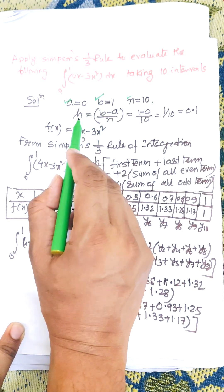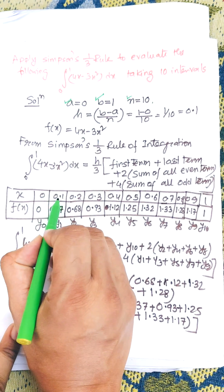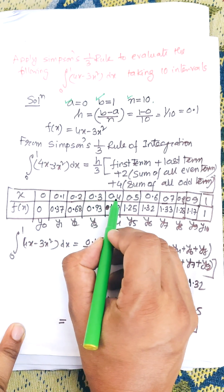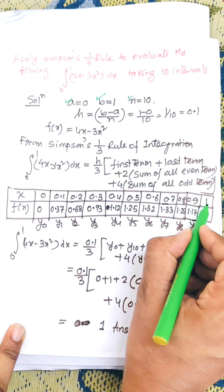Here the initial value is 0, then increment 0.1, 0.2, 0.3. We increment by 0.1 until we get the final value, which is 1.